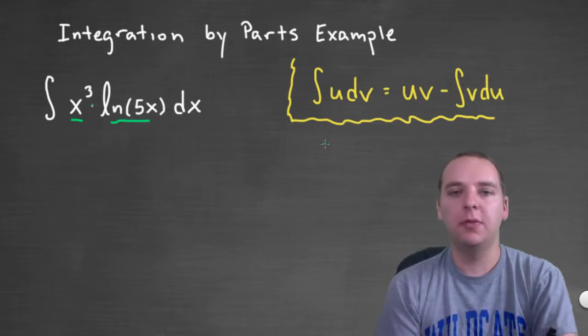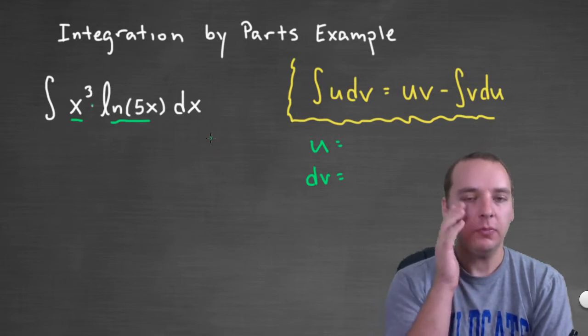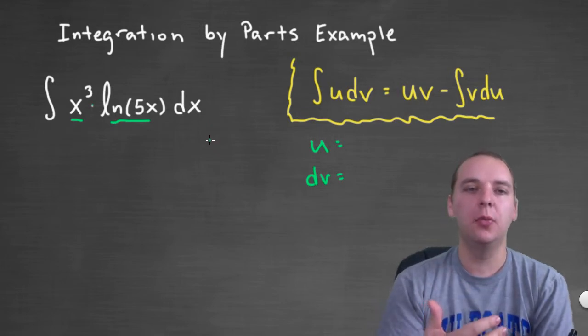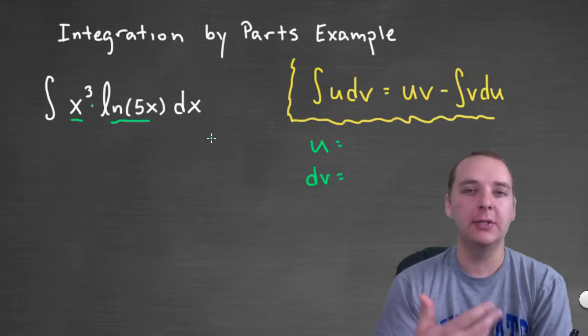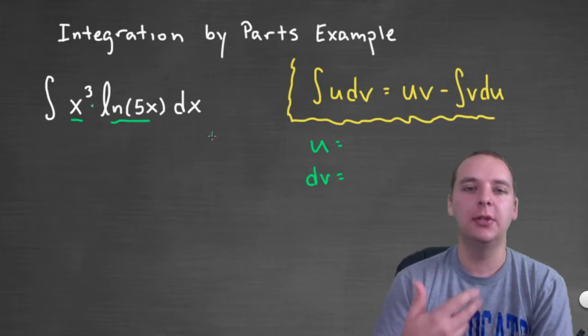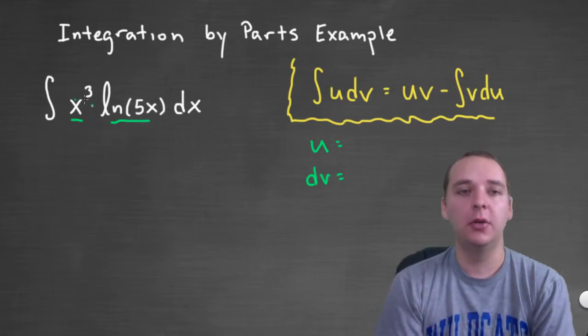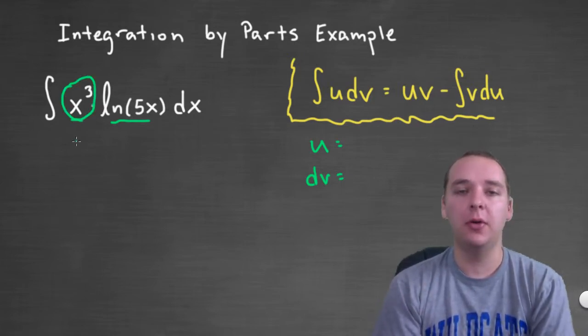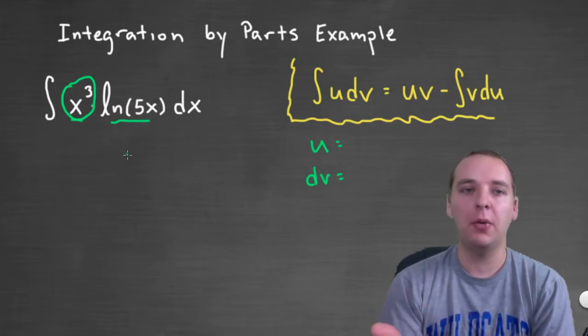So first of all we have to make a decision on who's going to be u and who's going to be our dv. Now typically, u is something that will be easy to differentiate and preferably get smaller and easier if we do that, and dv needs to be something that is relatively easy to integrate. Now you look at both of these and often times, very often, we choose the power of x to be u because du would get smaller from the power rule.